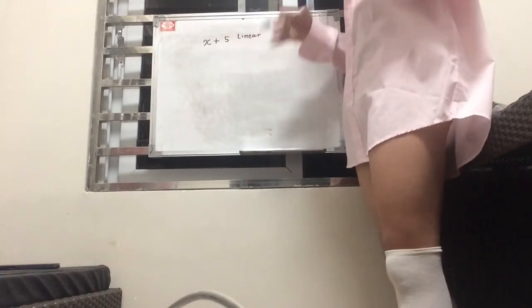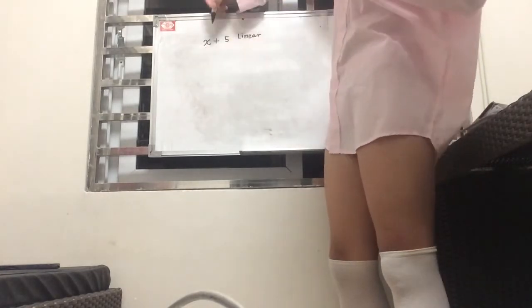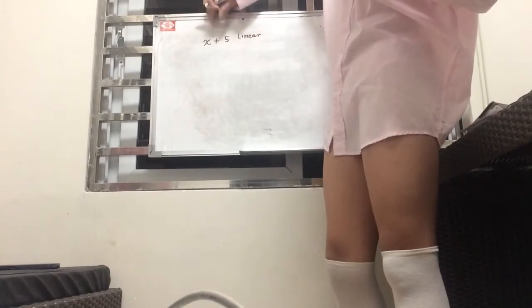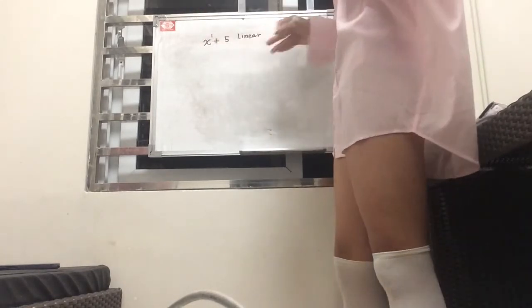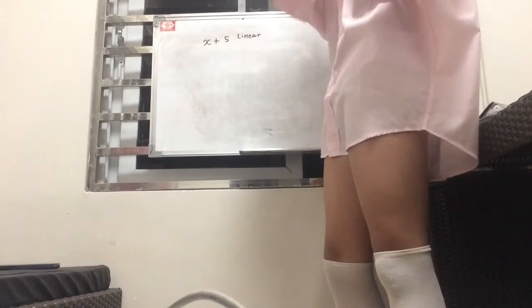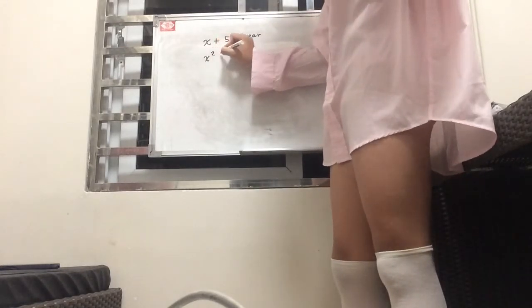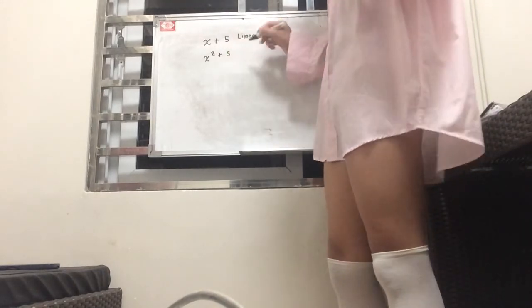So if we're given a polynomial equation or a polynomial expression x plus five, this is something that we call a linear equation or a linear expression. Because it's linear, because the degree or the exponent of our first term here is simply one. So that's what makes it a linear expression.